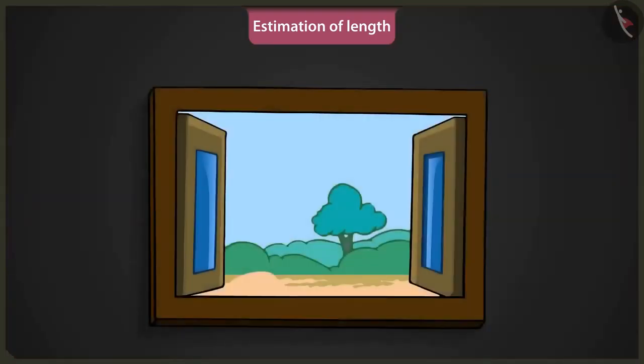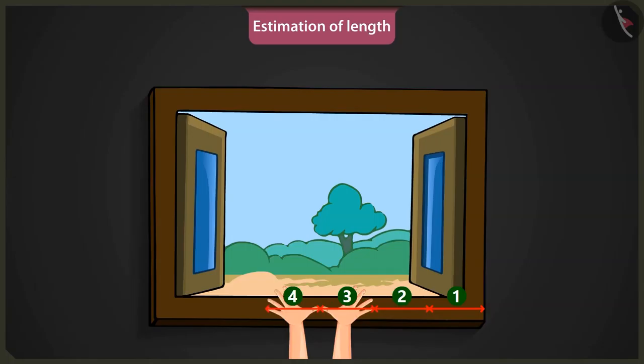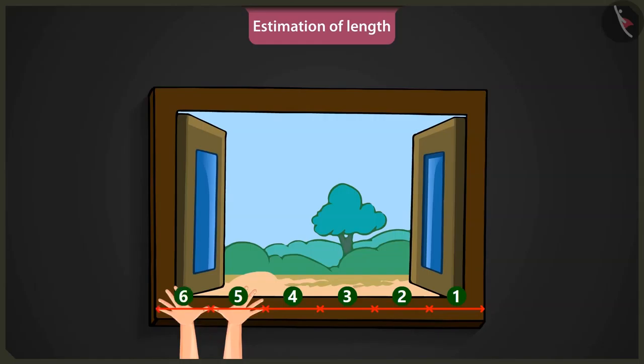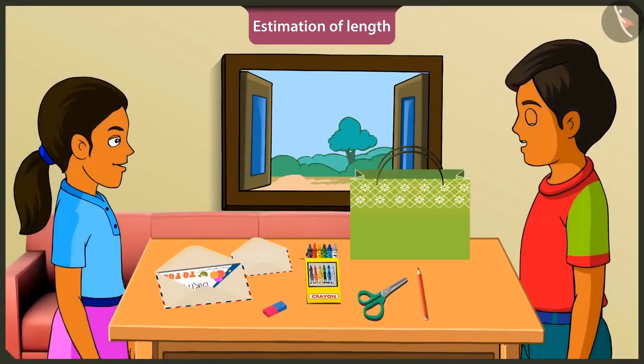Do you want to try it? This is one hand span long and now, I will place the left hand touching the right hand that makes two hand spans. Now, I lift the right hand and place it forward touching the left hand. This is three spans long. Now, I will repeat the process till I reach the end of the window. Like this, the length of the window is six spans of my palm.